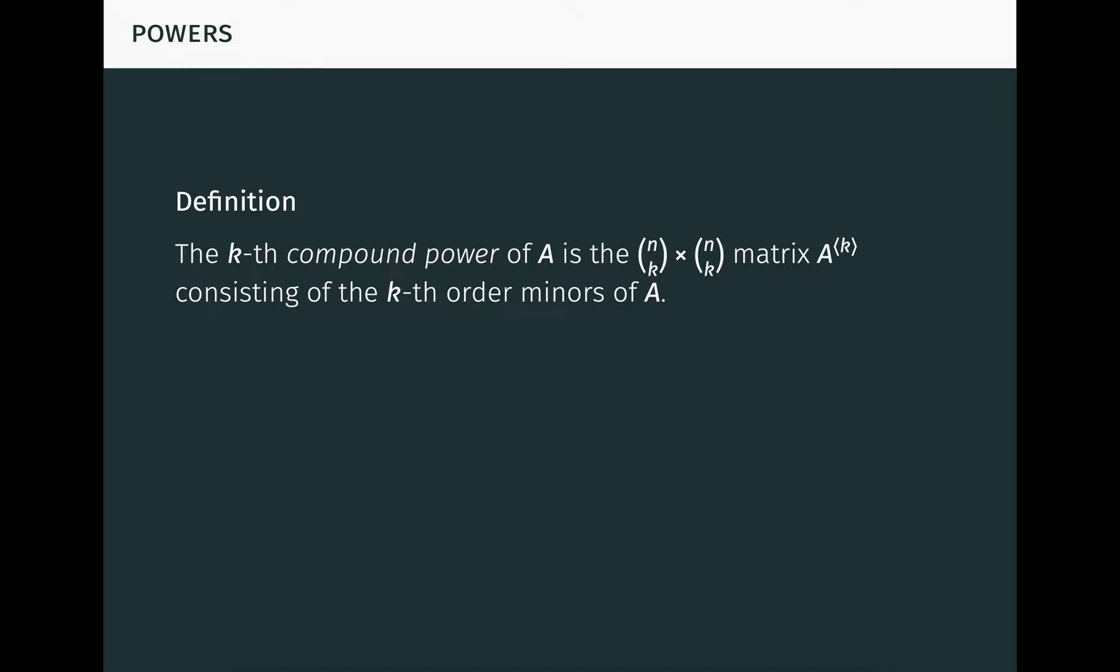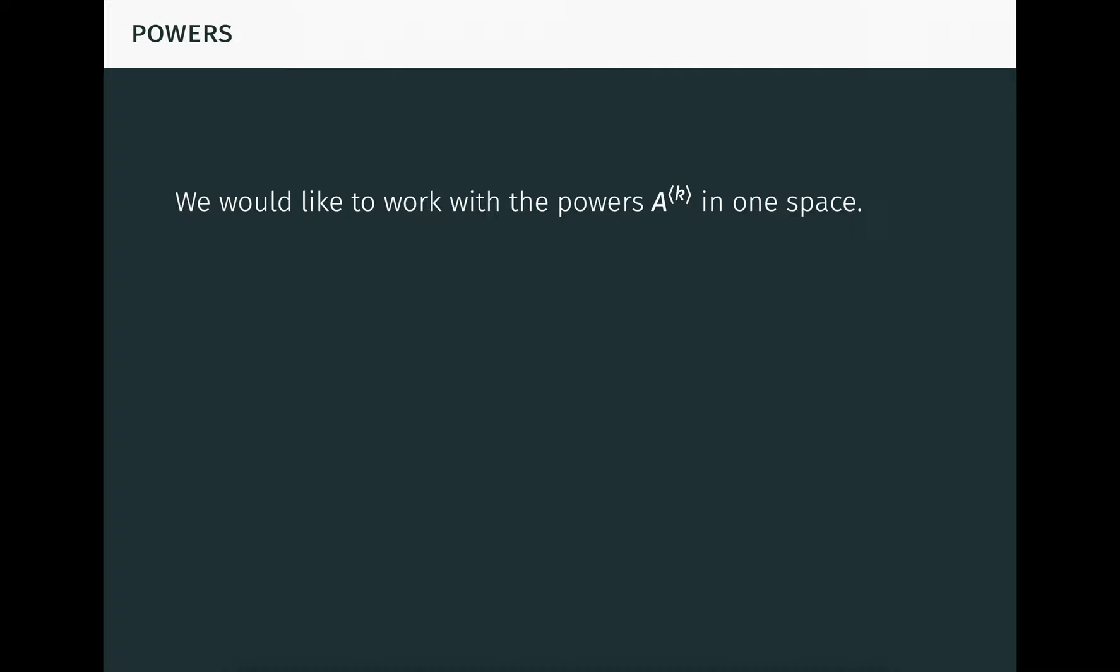The kth compound power of A is the n choose k by n choose k matrix A to the k, consisting of the kth order minors of A. For mu and nu in nk, the mu nuth entry of A to the k is the minor det A mu nu. We recall our notational choices here. First, we're putting angle brackets around the exponent k in the compound power to distinguish it from an ordinary matrix power. Second, we're using the elements of nk themselves to index the entries of the power, which is natural because the entries of the power are minors. Third, we're using parentheses with subscript and superscript to denote an entry of a matrix, while we're using vertical bars with subscript and superscript to denote a minor of a matrix. By convention, the 0th compound power of A is the 1 by 1 matrix consisting of the single element 1. This makes for nice matrix algebra.